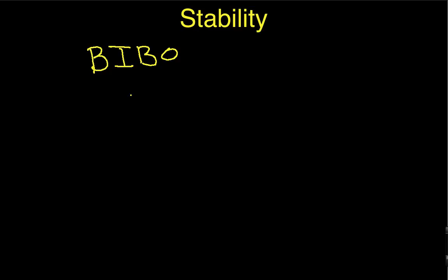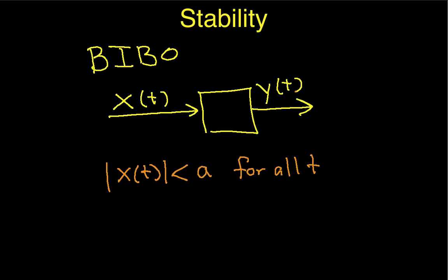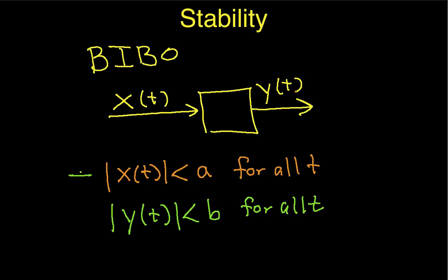The idea behind it is this. If I have a system that has an input x of t and output y of t, this system will be BIBO stable if the absolute value of the input being less than some constant a for all t implies that the absolute value of the output will be less than b for all t. If this statement implies that this statement is true, then the system is bounded input, bounded output stable.